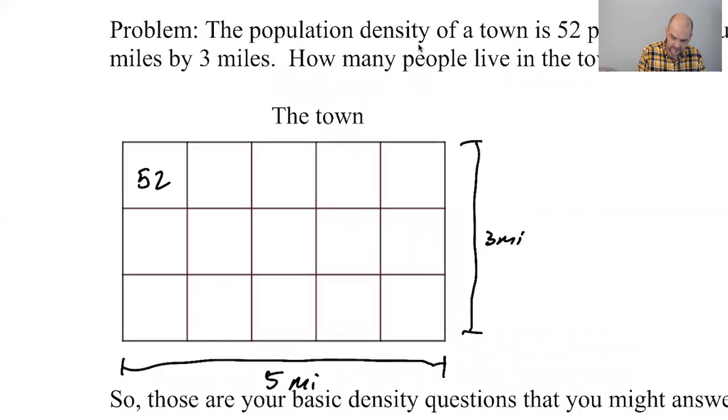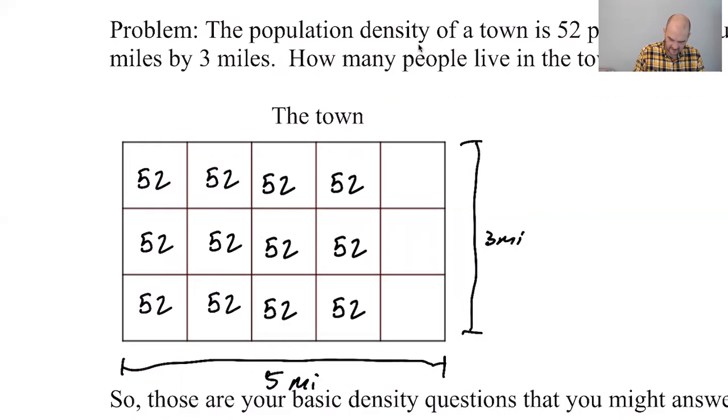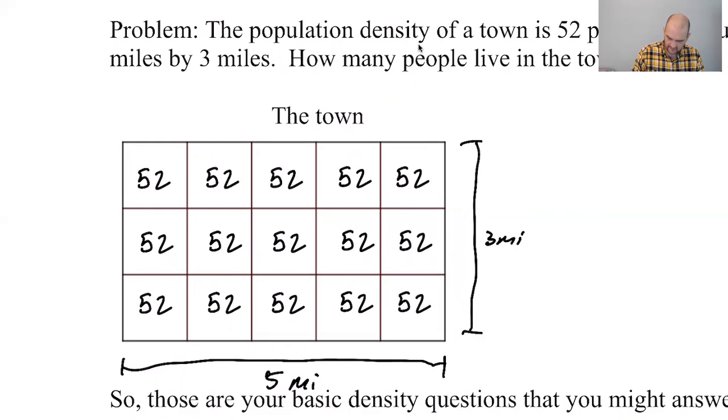This is three miles and then 52 people per square mile. So that's 52. And then we're going to duplicate a lot. Duplicate. What's the best way to do this? I'm going to duplicate. Duplicate that, duplicate it again, and then duplicate all of this. Duplicate one more time. There you go. 52 people per square mile. So each of those boxes is one square mile. It has 52 people in it.